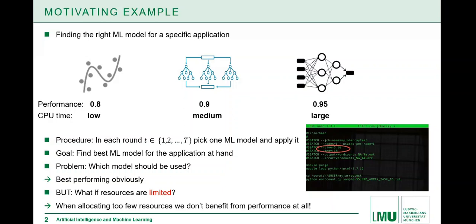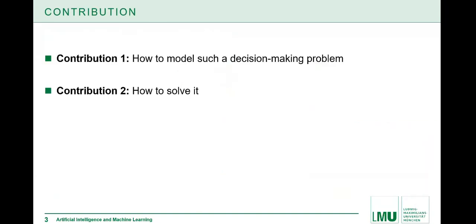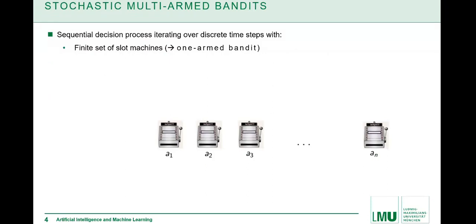The question is how can we combine the two, good performance and also choose the resources in an appropriate way? This is what we did in our paper. First, we asked how can we model such a decision making problem in a more general way, and then in a second step, how to solve it. To model it, we resort to the so-called stochastic multi-armed bandits.